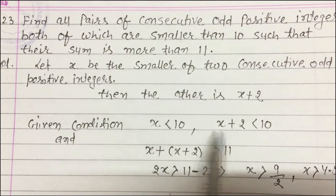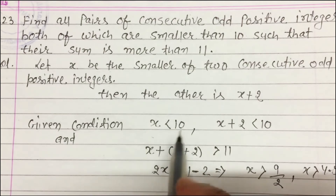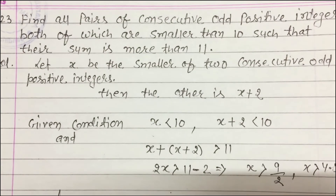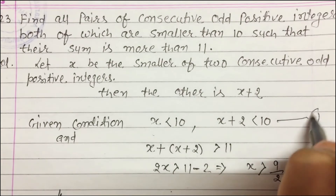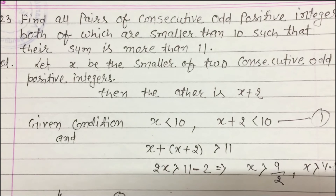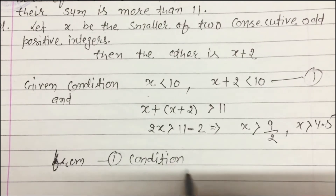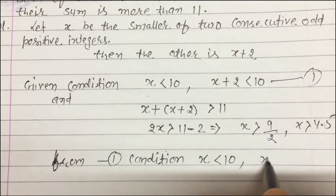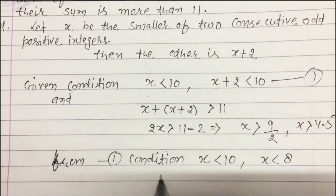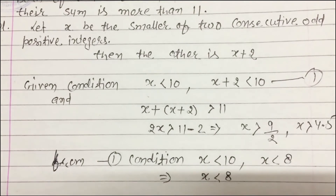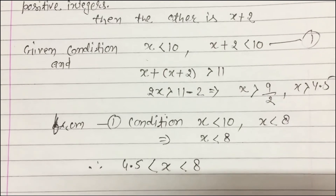From the first condition, combining both inequalities gives x < 8. So x > 4.5 and x < 8, and x is an odd number.